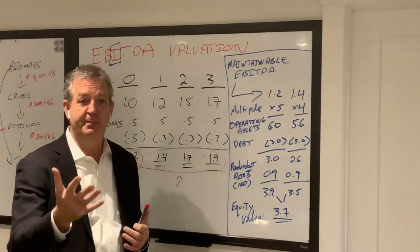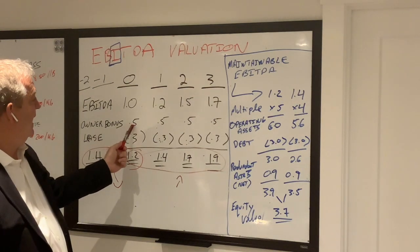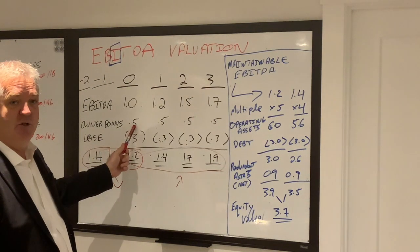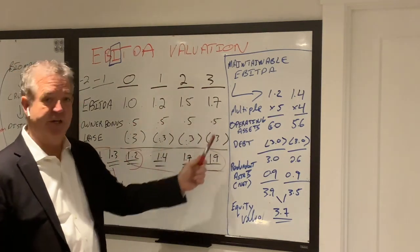When I buy the business, I'm not paying that bonus. So that's a fair normalizing entry. I can add back $500,000 that you were lucky enough to take out in year zero and also in my projection period.